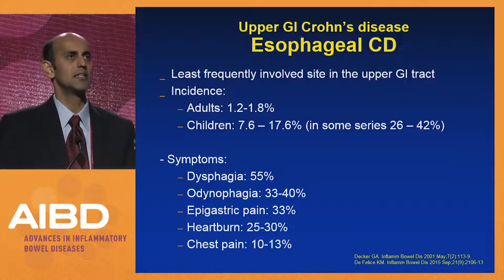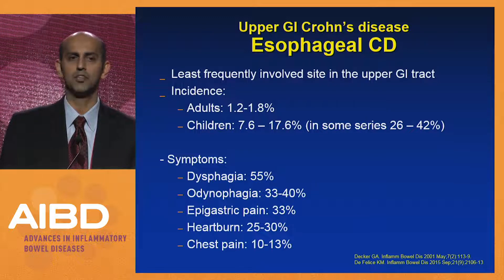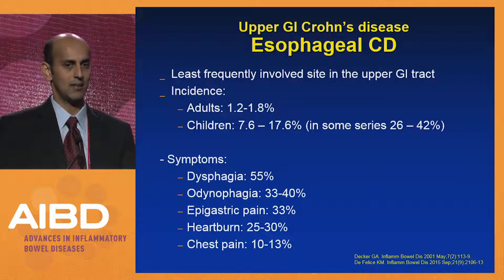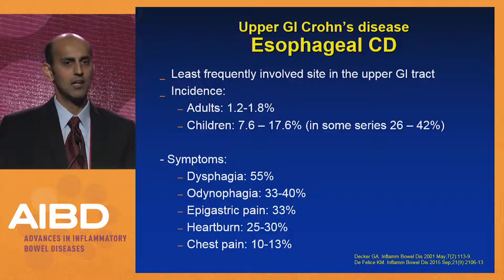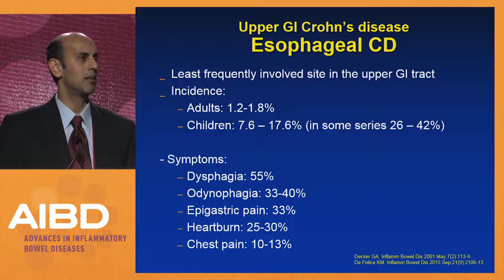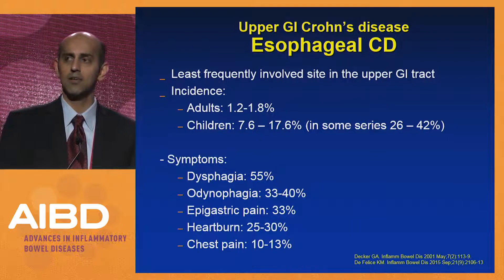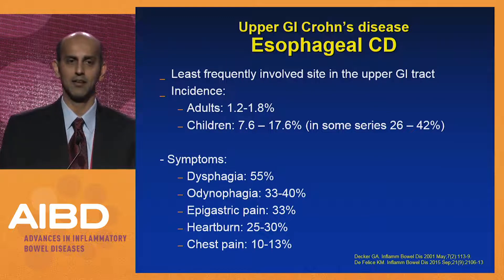Breaking down the subtypes, starting with esophageal Crohn's disease: of the uncommon sites, this is really where isolated involvement is least common. In adult cohorts, about 1.2 to 1.8% will have esophageal involvement. In children, it seems to be more common — between 8 and 18%, and in some series as high as 42% — though we clearly don't see those high numbers in clinical practice.